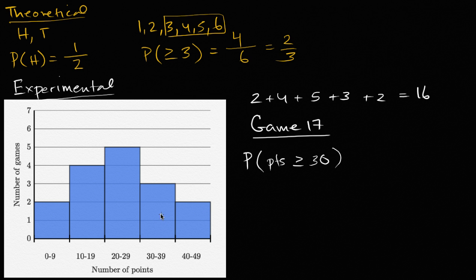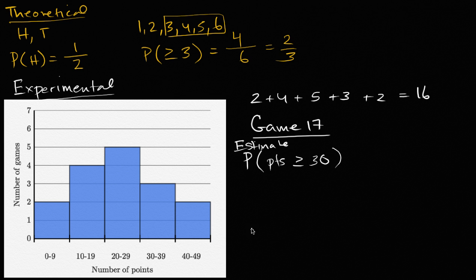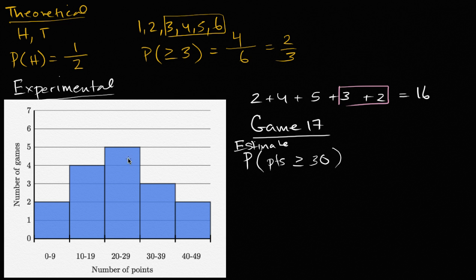It depends on the defense of the team you're facing, so it won't be super exact. But you can estimate based on experiments, based on what you've seen in the past. The experimental probability estimate: out of the 16 games so far, there have been three games from 30–39 points plus two games from 40–49 points — five games where you scored greater than or equal to 30 points. So an estimate of your probability based on past experience is five out of sixteen, or five-sixteenths.